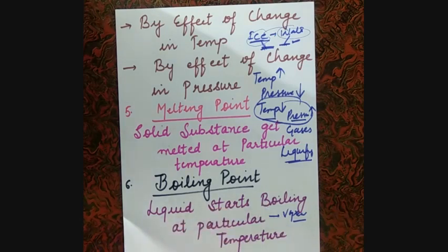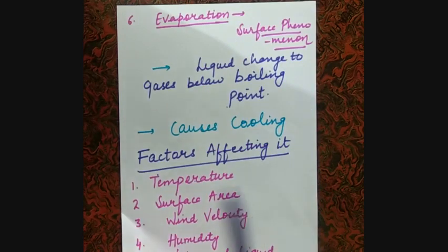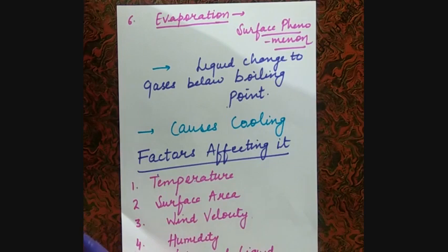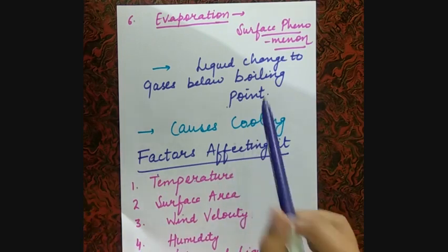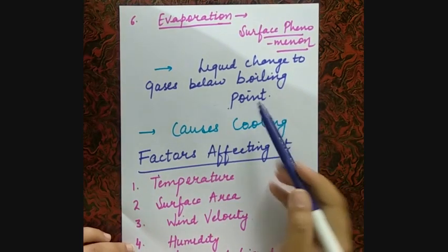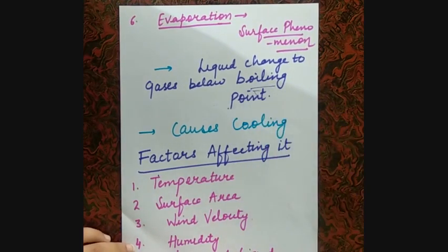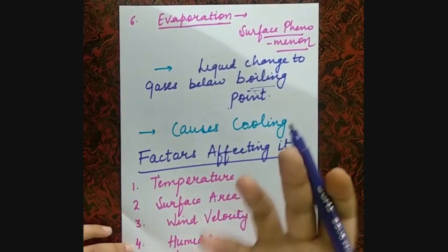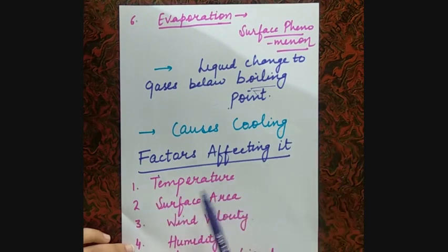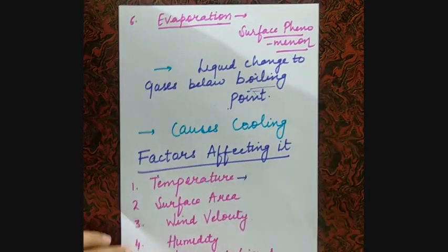After that we discussed evaporation. Evaporation is a surface phenomenon; boiling is a bulk phenomenon. What happens is that liquid changes to gas below its boiling point. After the boiling point is reached, the entire bulk changes. But evaporation is a surface phenomenon. Evaporation causes cooling — we discussed this already.